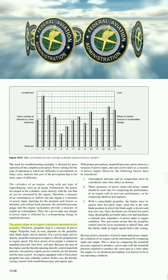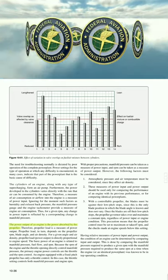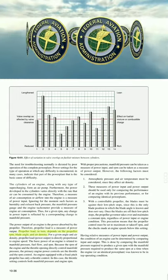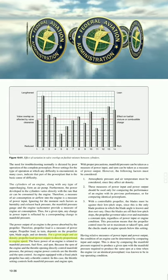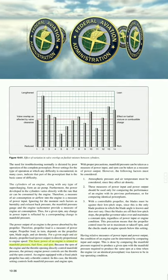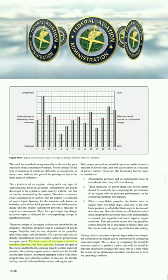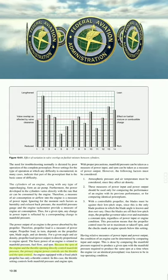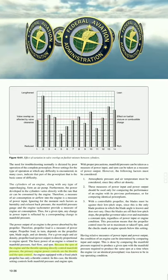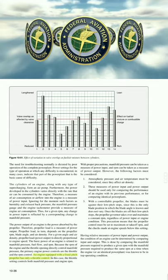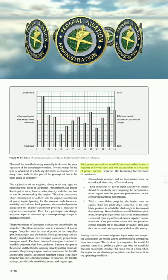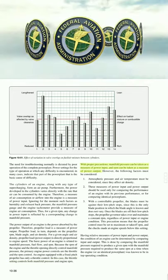The power output of an engine is absorbed by the propeller, so propeller load is a measure of power output. Propeller load depends on the propeller RPM, blade angle, and air density. For a given blade angle and air density, power output is directly proportional to engine speed. The basic power of an engine is related to manifold pressure, fuel flow, and RPM. With a fixed-pitch propeller, the throttle setting controls both manifold pressure and engine RPM.